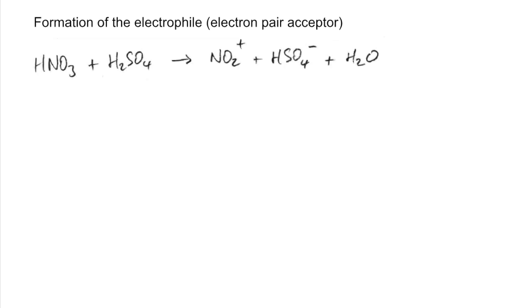Moving on to the mechanism. The first part is the formation of the electrophile, the electron pair acceptor. That happens when you take the two concentrated acids and they react to form the nitronium ion NO2+, which is going to react with the benzene ring. A pair of electrons from the pi electron cloud will be attracted to the nitronium ion.